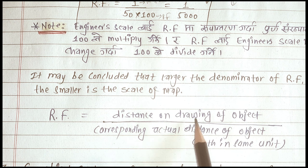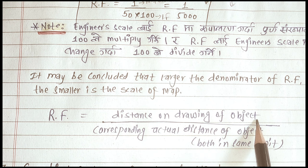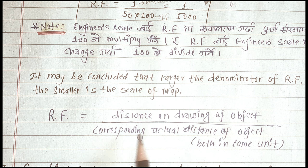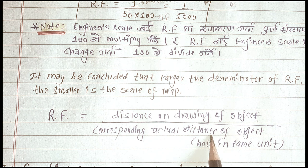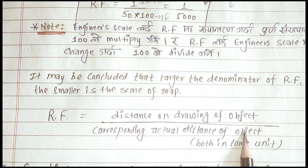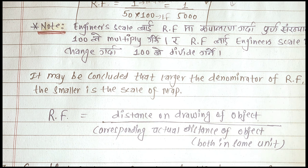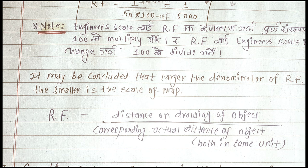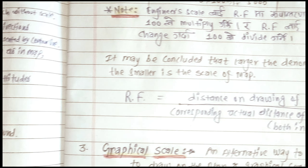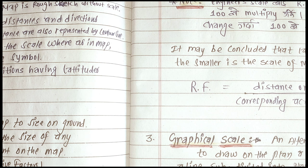The Representative Fraction (RF) is defined as the distance on the ground of an object corresponding to the actual distance of the object, both expressed in the same units — a one-dimensional representative fraction.